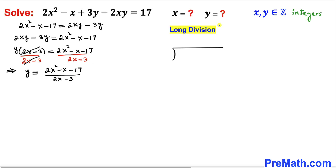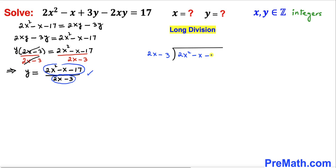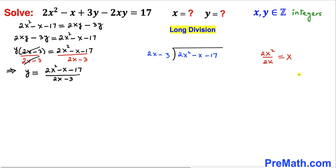In the next step we are going to perform long division on the right hand side. In this rational function, 2x minus 3 is our divisor and goes outside, while the numerator 2x squared minus x minus 17 is our dividend inside. Looking at the leading terms, 2x squared divided by 2x simplifies to x, so we write x as the first term of the quotient.